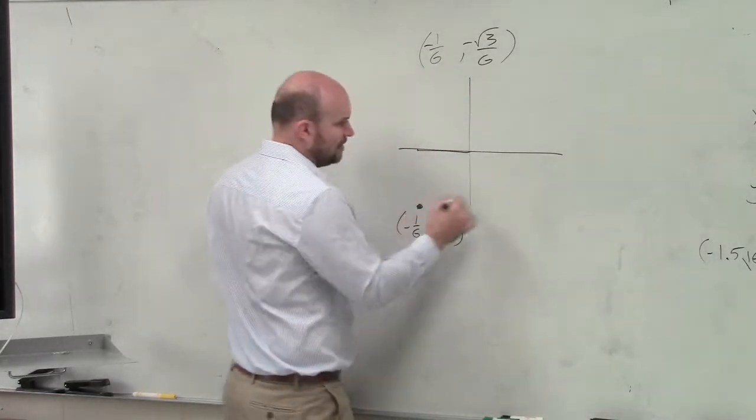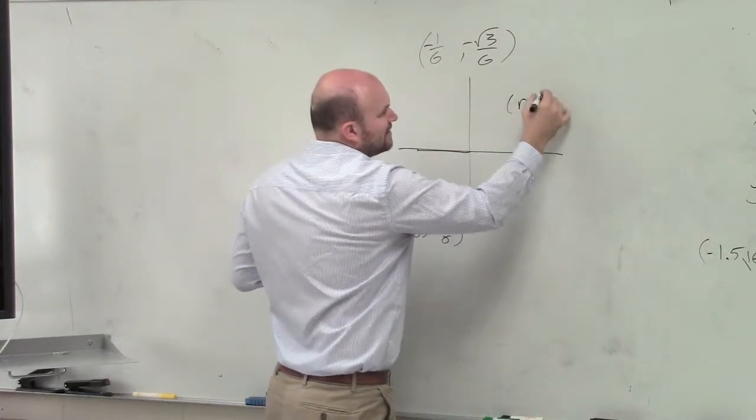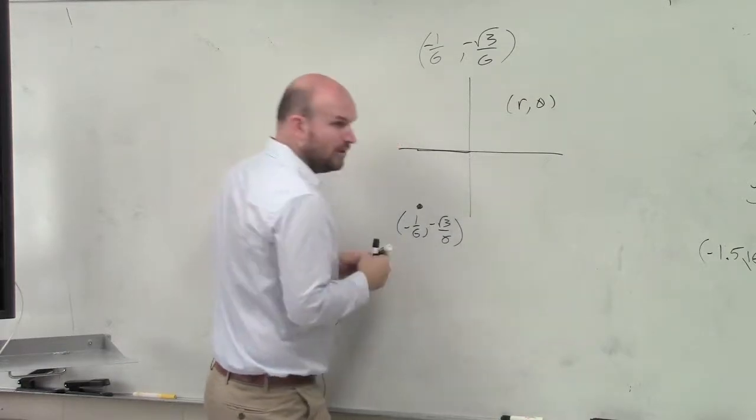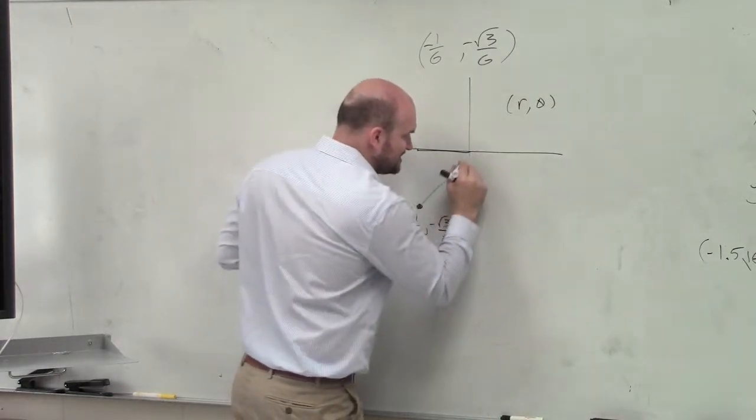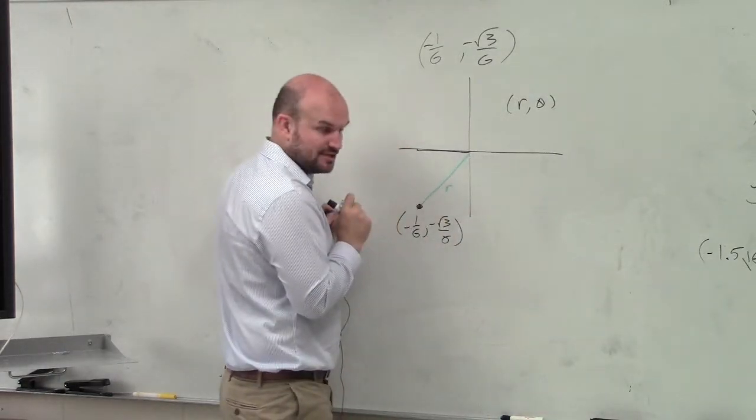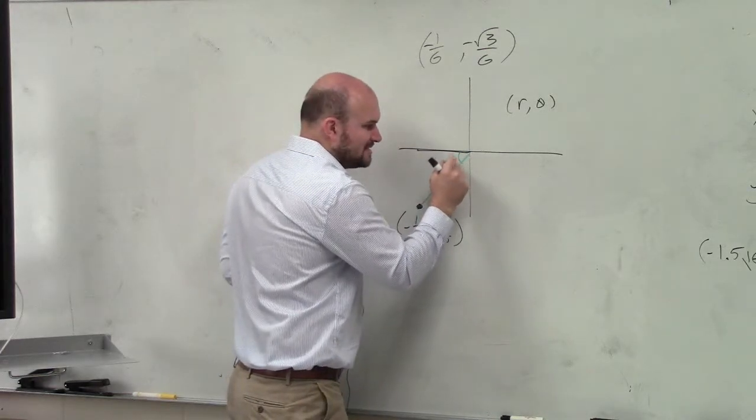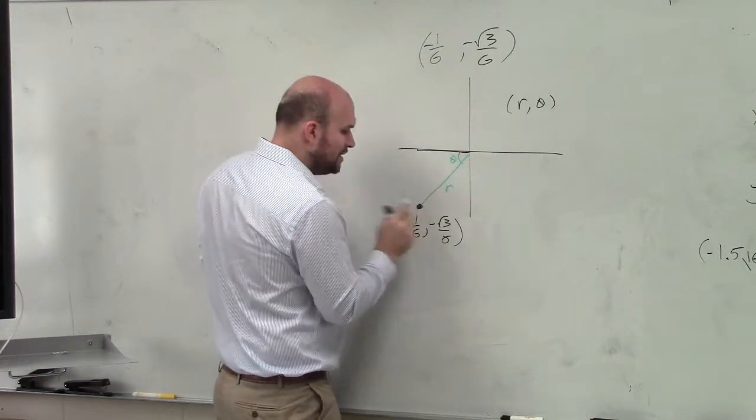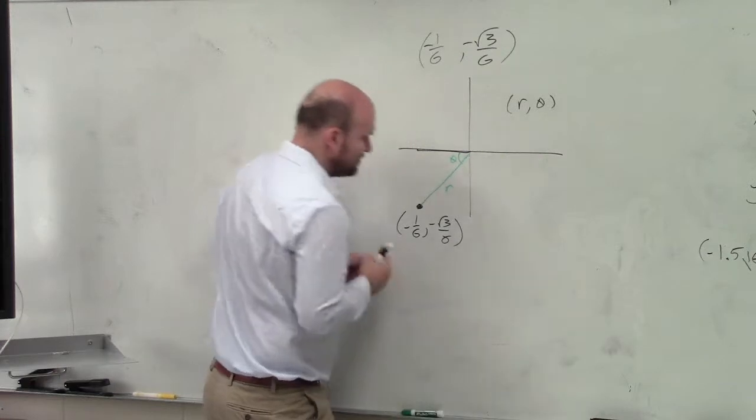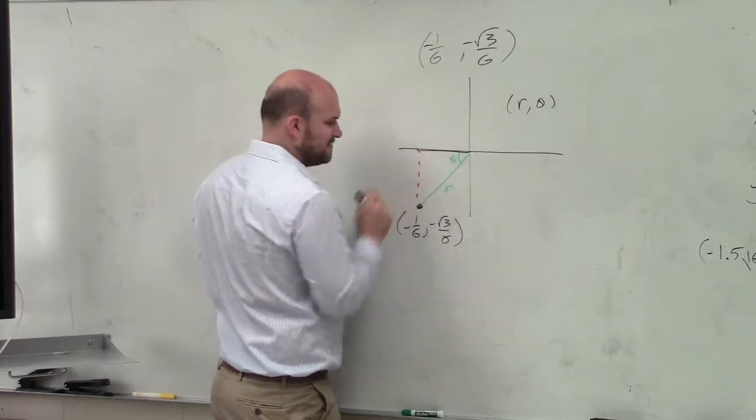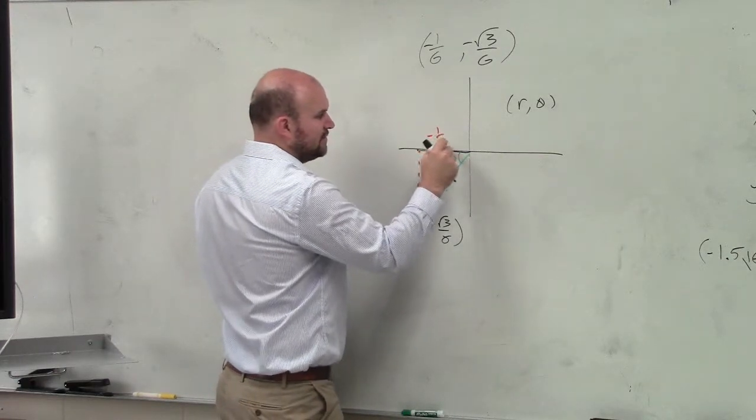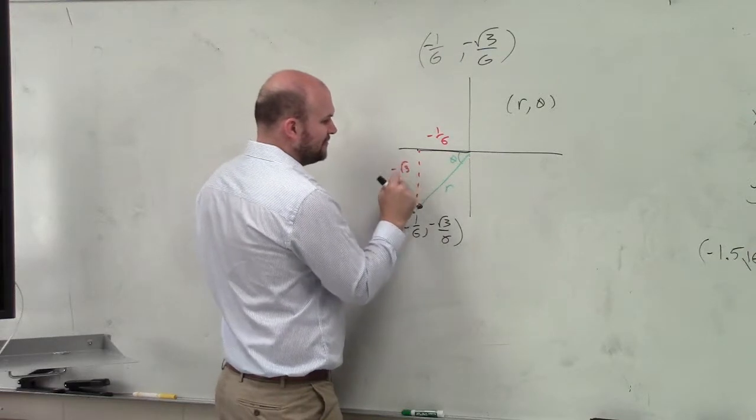What we're looking for is what is the r and what's the theta? So what is the r? r represents the distance away from the center, and theta represents the angle. Well, I know if I create a triangle, I can find both of those pieces of information, because this is negative 1 sixth, and this is negative square root of 3 over 6.